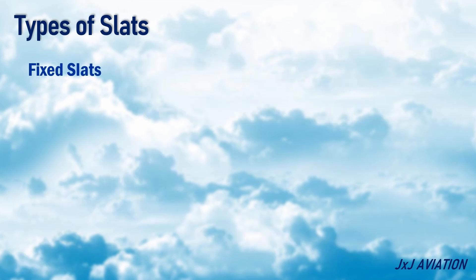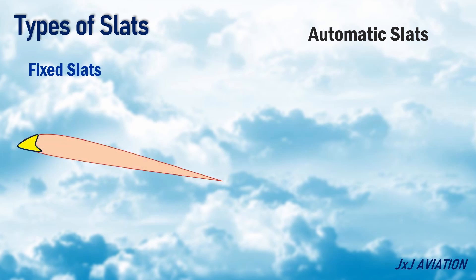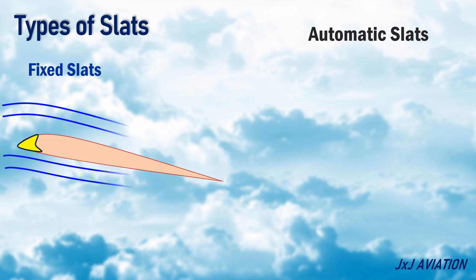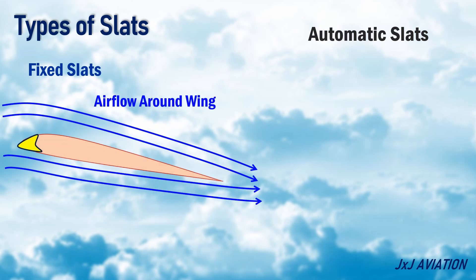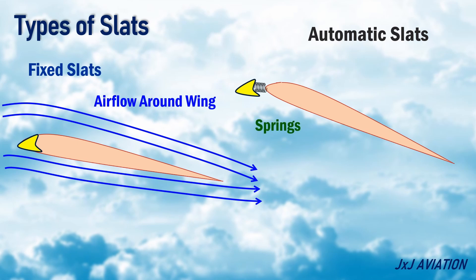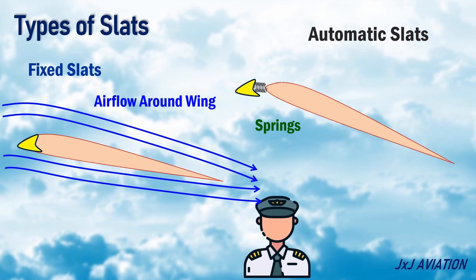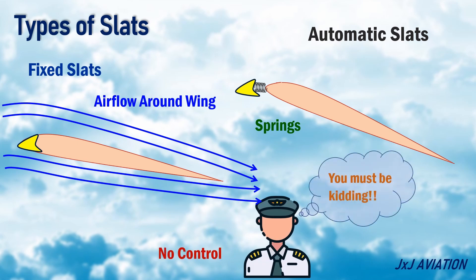Automatic slats: these slats extend automatically depending on the airflow around the wing. Springs loaded within the slats force them to extend automatically when the angle of attack increases. The pilot has no control of the slat extension or retraction.